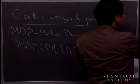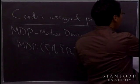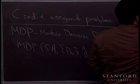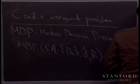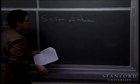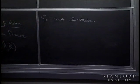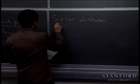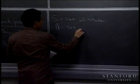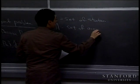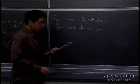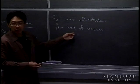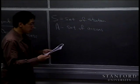An MDP comprises a 5-tuple. The first element, S, is a set of states. For the helicopter example, the set of states would be the set of possible positions and orientations of the helicopter. A is a set of actions — for the helicopter example, this would be the set of all possible positions we could put our control sticks into.